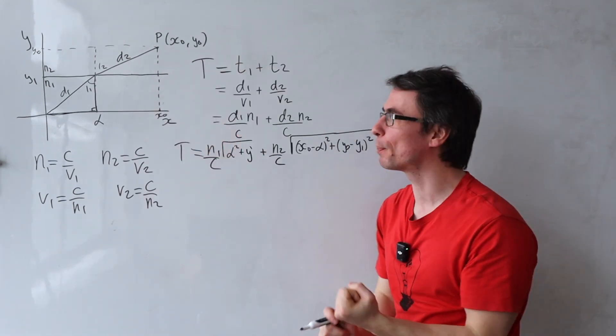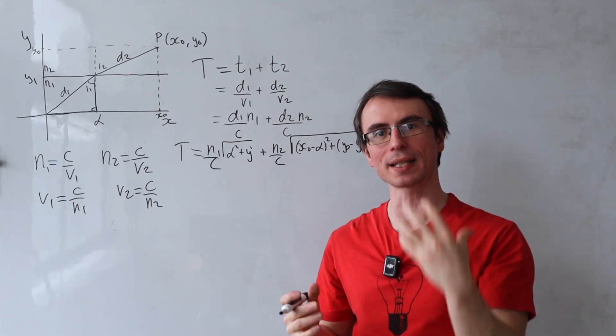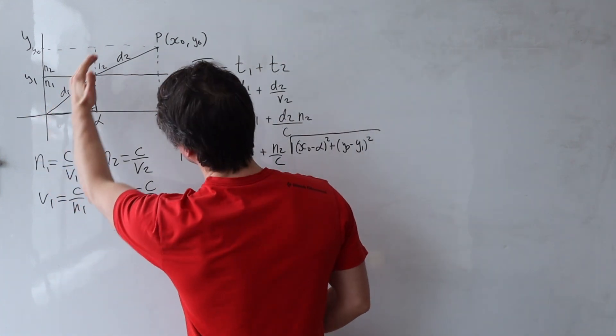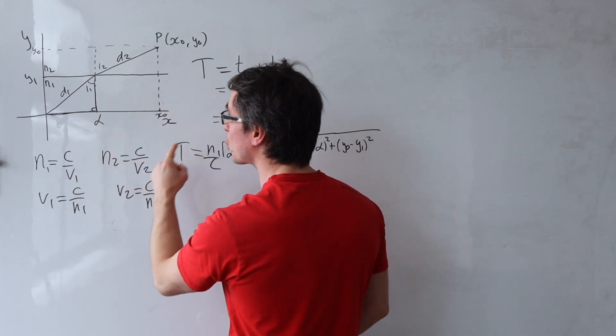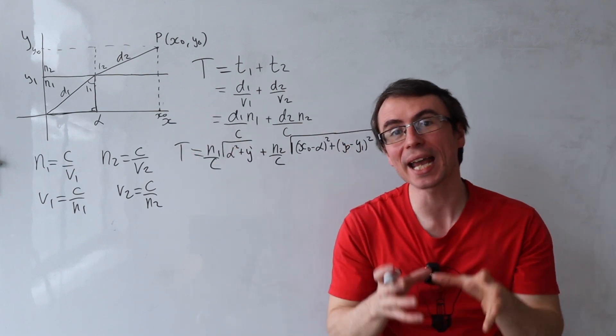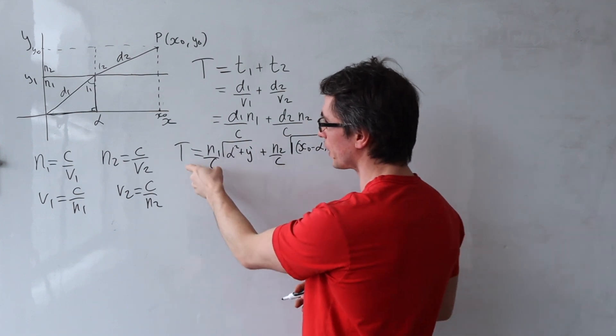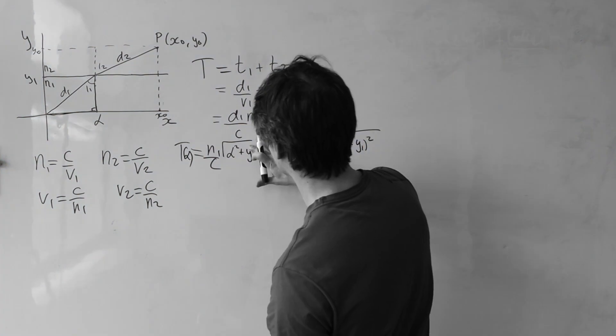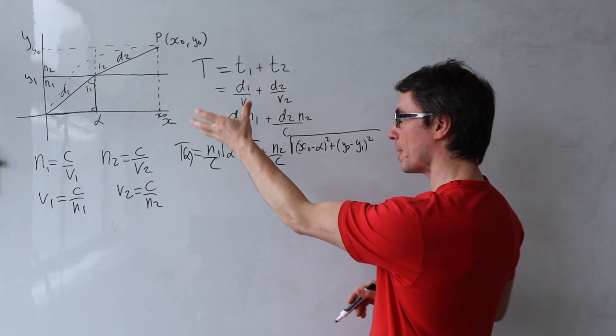We're going to need this distance squared which is going to be by Pythagoras the square root of x0 minus alpha squared plus y0 take away y1 squared. And this here is the time. Now according to this very deep principle the light will take a path such as to minimize the time taken between two points. So out of all the different paths that the light could possibly take which are going to correspond to a different intersection coordinate alpha the light is going to pick the one which minimizes the time.